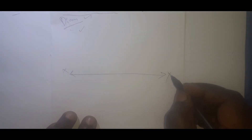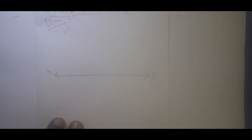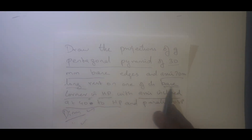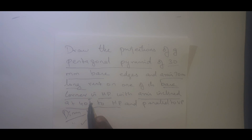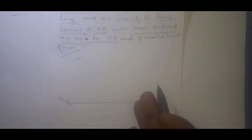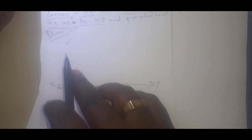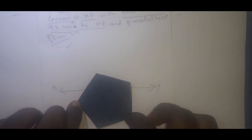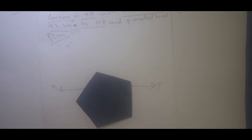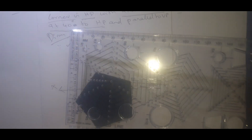I will draw it roughly first. I will draw the XY line like this. Here it is said it is resting with one of the base corners, so I need to identify whether the corner should come this side or that side. For a pentagon, if a corner is here, the opposite side will be an edge. So we cannot start the diagram with a point — we have to start with a line.